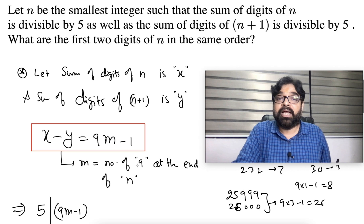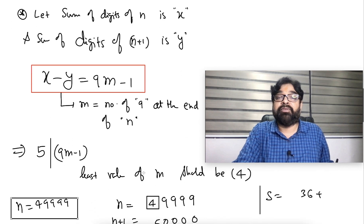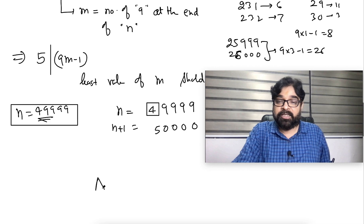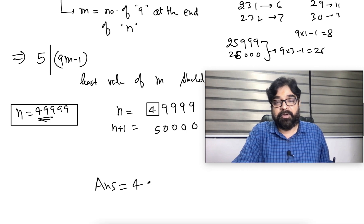But, they ask you, what they ask? First two digits of n in the same order, the first two digits is 49. The answer will be 49. Beautiful question.